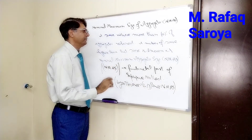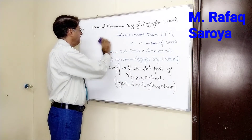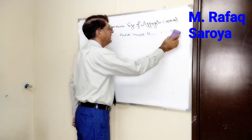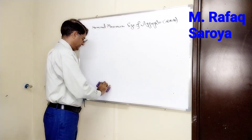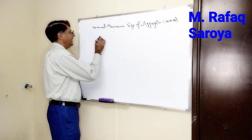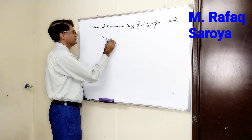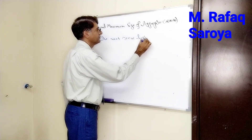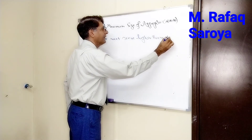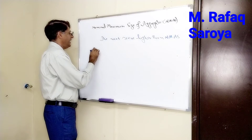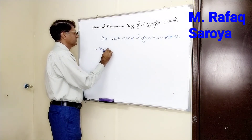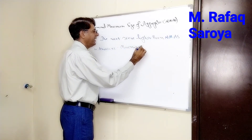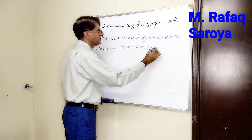After reaching the Nominal Maximum Aggregate Size, the next sieve higher than the NMAS is known as the Maximum Aggregate Size, or MAS.